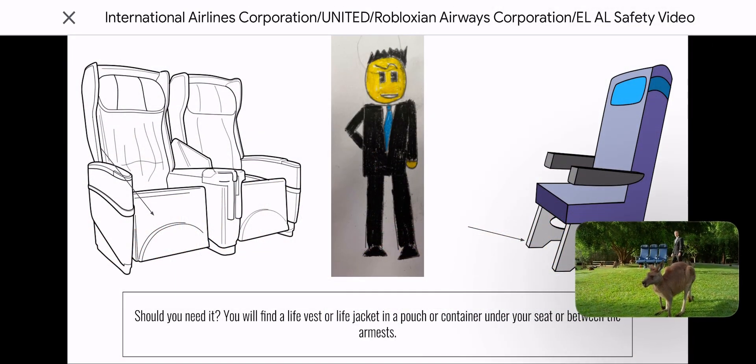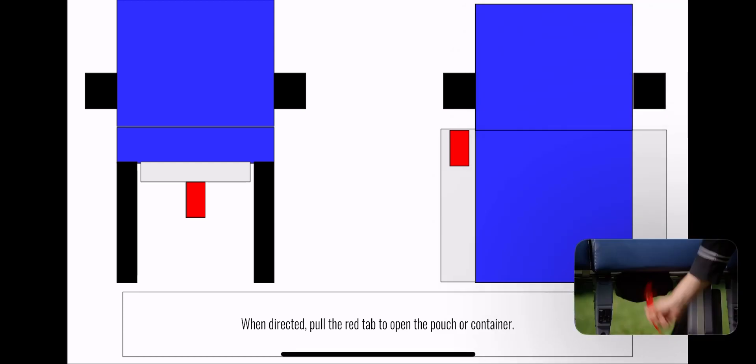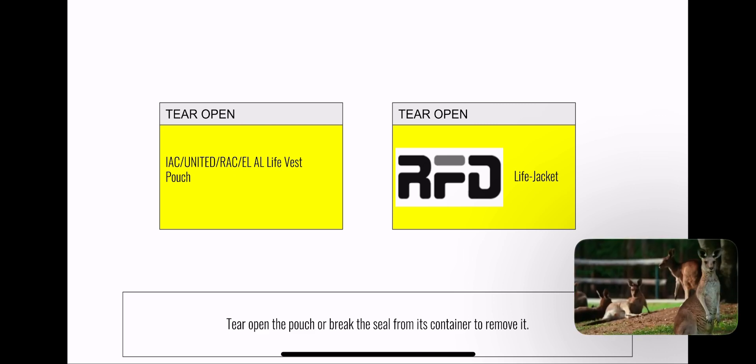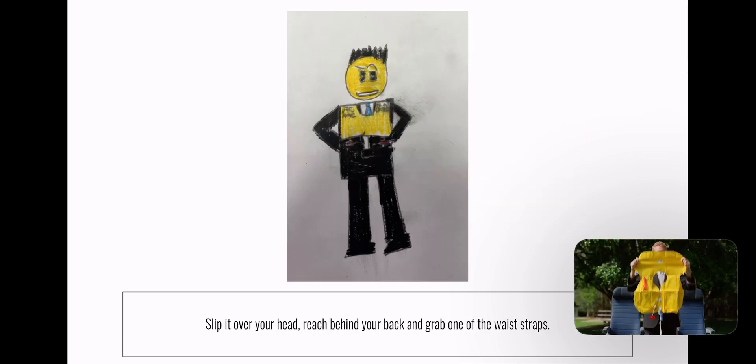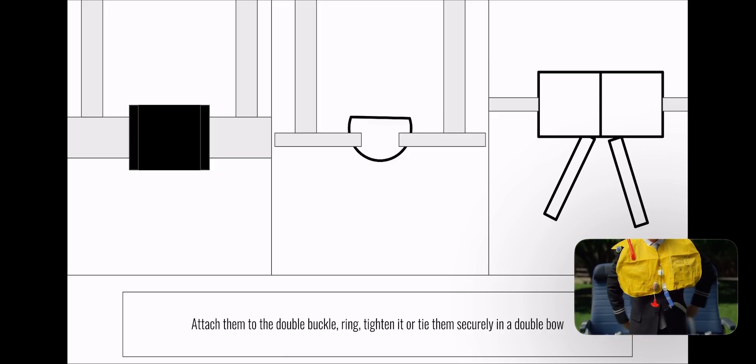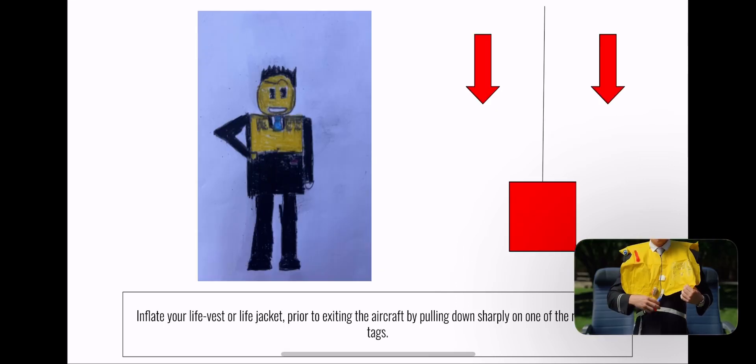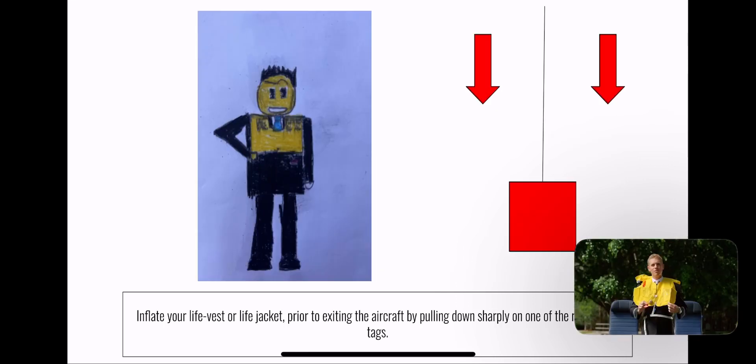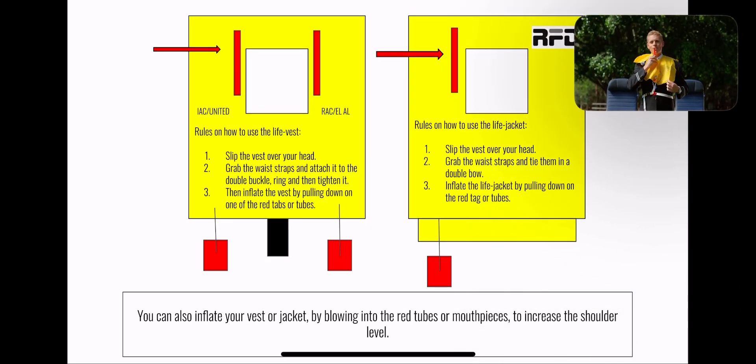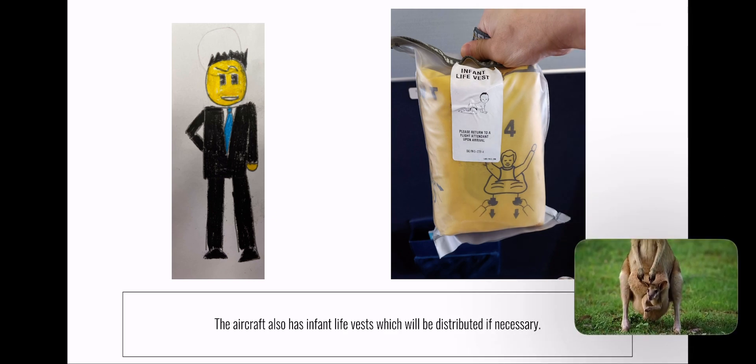Should you need it, you'll find a life vest equipped with a water-activated light under or near your seat. When directed, pull the tab to remove the pouch. Tear open the pouch, remove and unfold the vest. Slip it over your head. Wrap the belt around your waist and secure it to the buckle in front. Pull the loose end to tighten. Inflate your vest just prior to exiting the aircraft by pulling down sharply on the red tab. You can also inflate the vest by blowing into the tube. This aircraft is also equipped with infant life vests, which will be distributed if necessary.